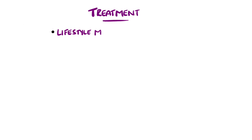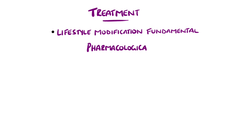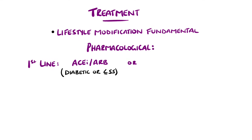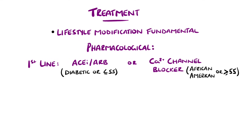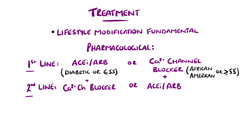Lifestyle measures are considered the first line in most cases of primary hypertension, but if despite these the pressure remains high, then according to the NICE guidelines the first line is typically an ACE inhibitor or angiotensin receptor blocker — the case for people who are diabetic or aged under 55. In those older than 55 or of African-American background, a calcium channel blocker is first line. The next step is adding either a calcium channel blocker, ACE inhibitor, or angiotensin receptor blocker, depending on which agent was started as the first line.